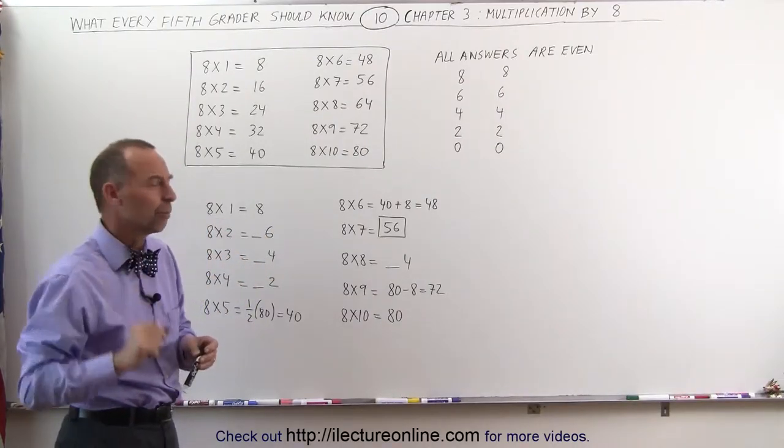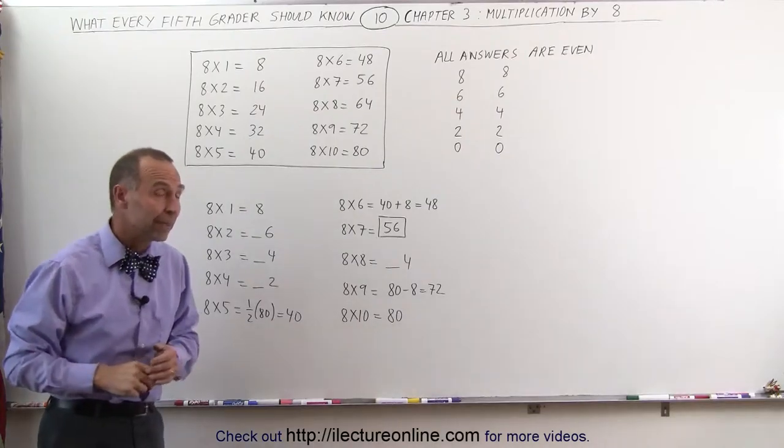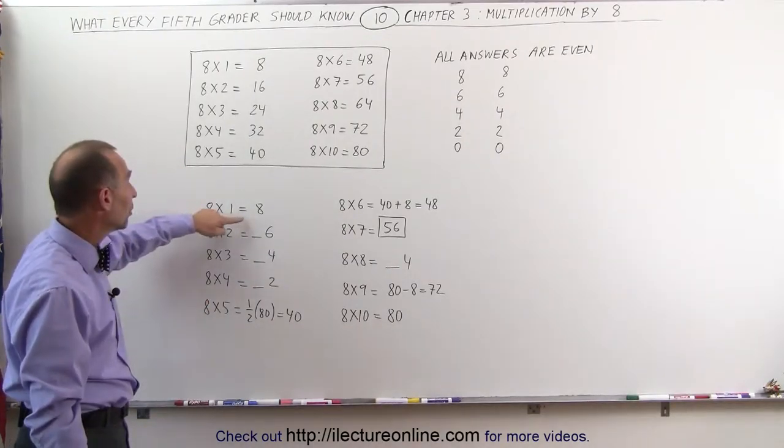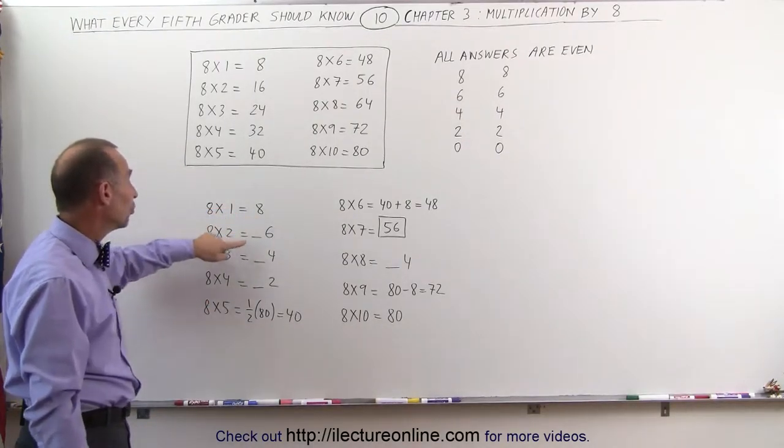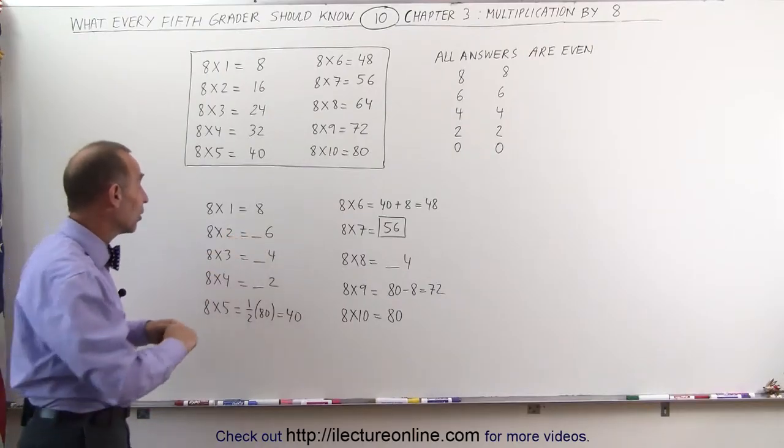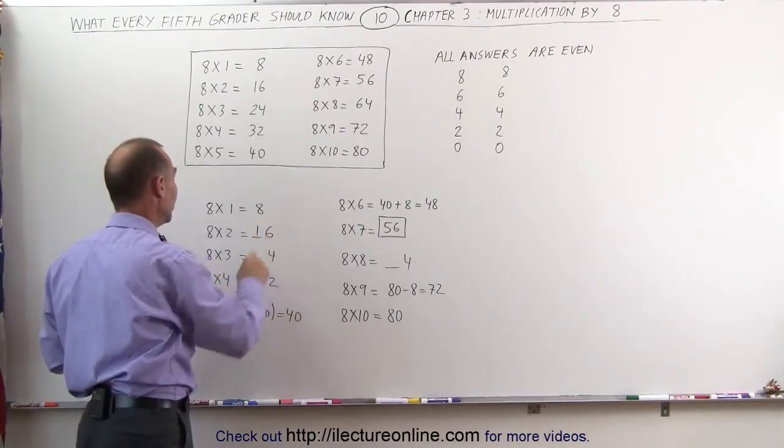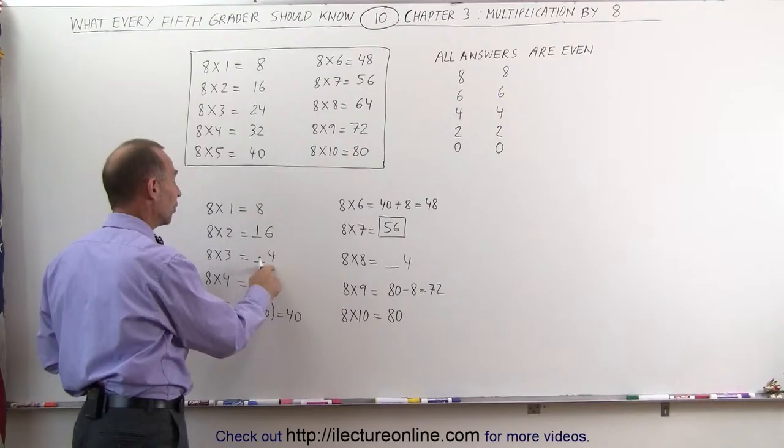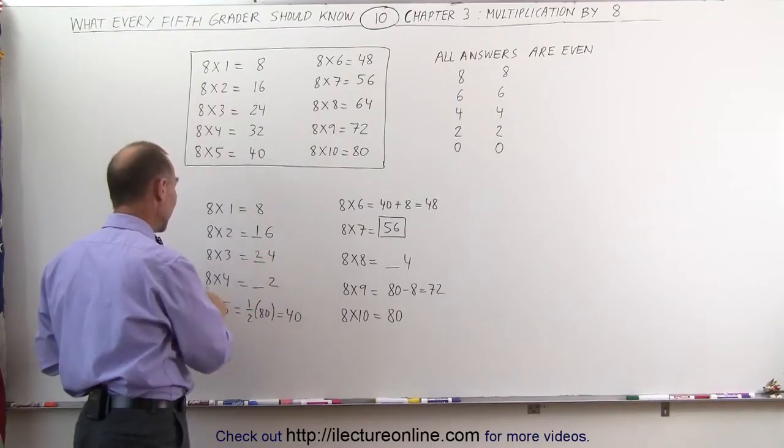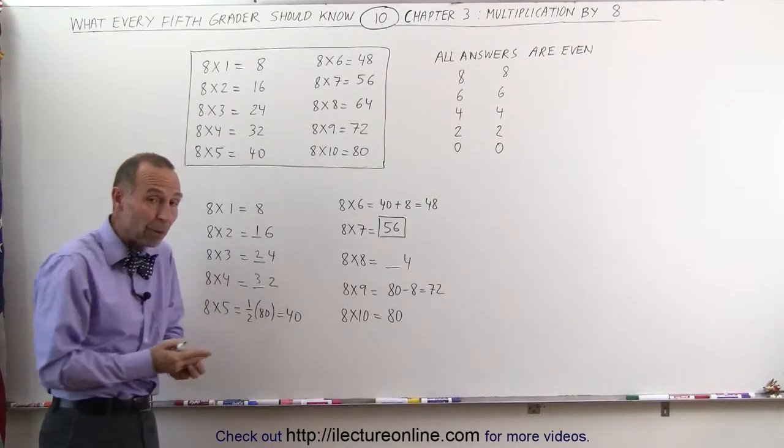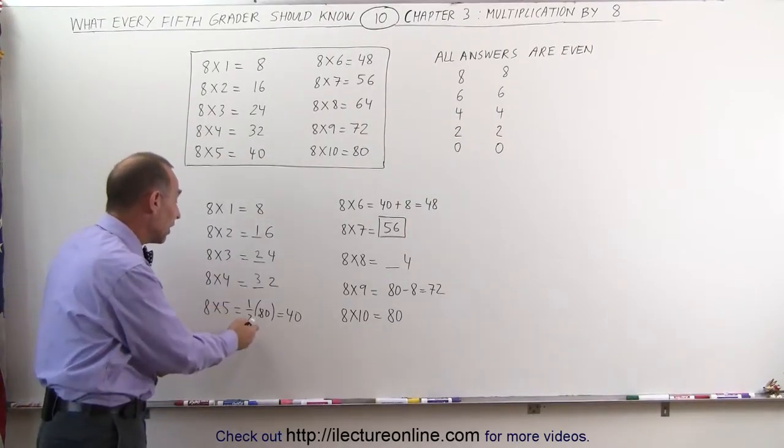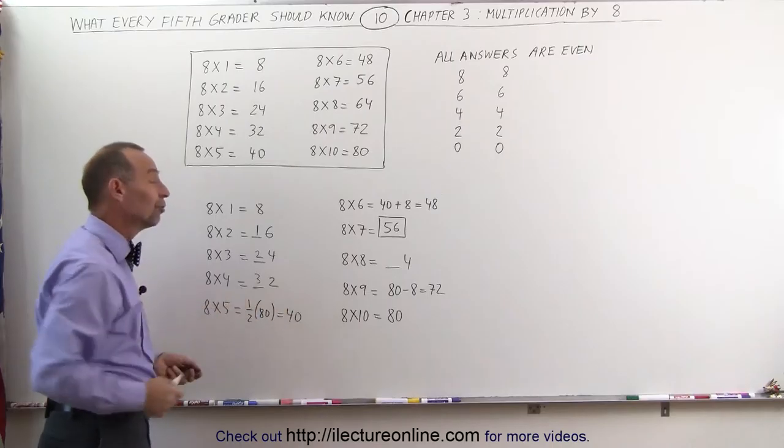That makes it easier to figure out and remember what the answers are. In the first case, we have 8 times 1, which is 8, and 8 times 2, which we know ends in a 6, and the number that goes in front is a 1. 8 times 3 ends in a 4, the number that goes in front is a 2. 8 times 4 is a 2, the number in front is a 3. And 8 times 5 is the halfway point, that's half of 8 times 10, which is 80, half of 80, which is 40.